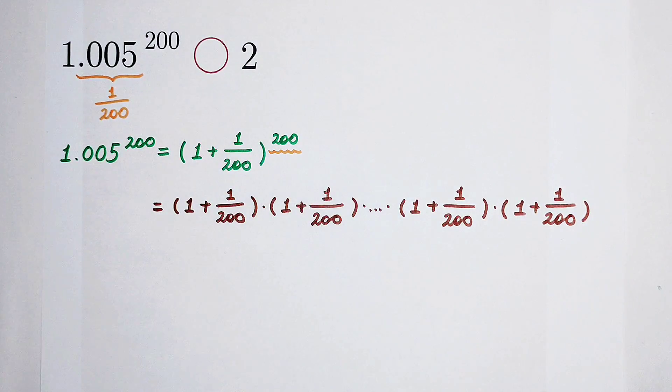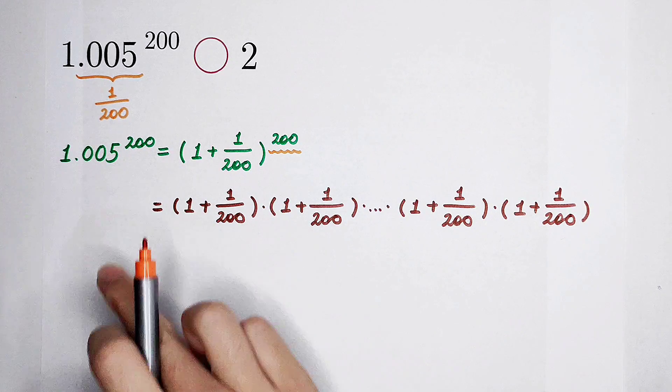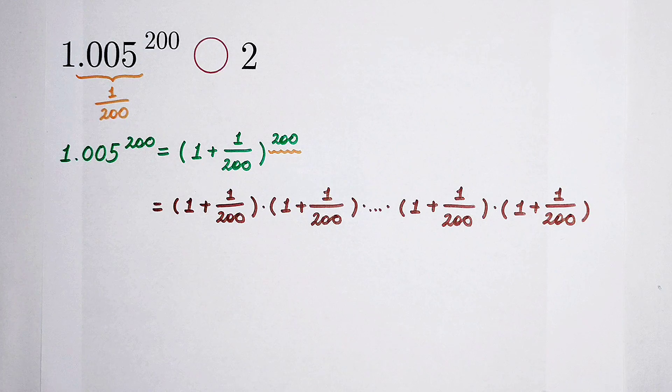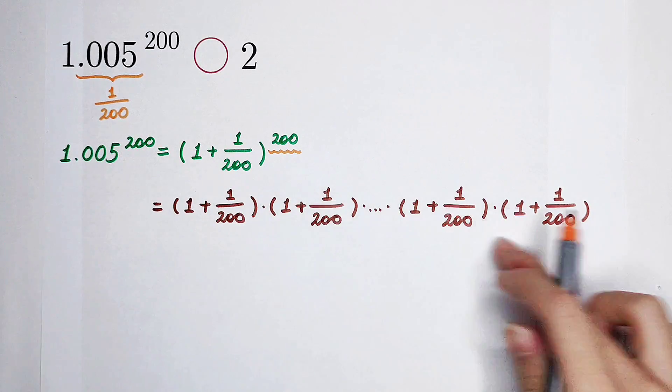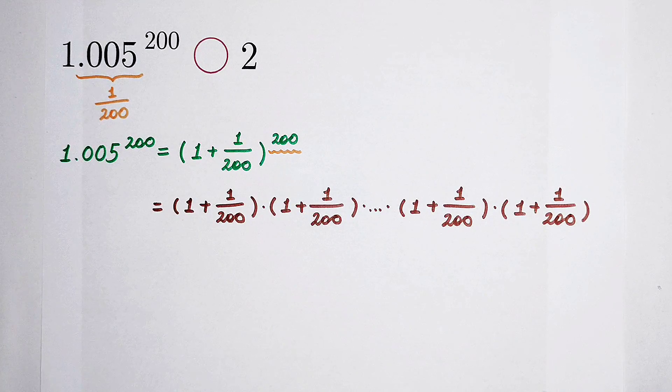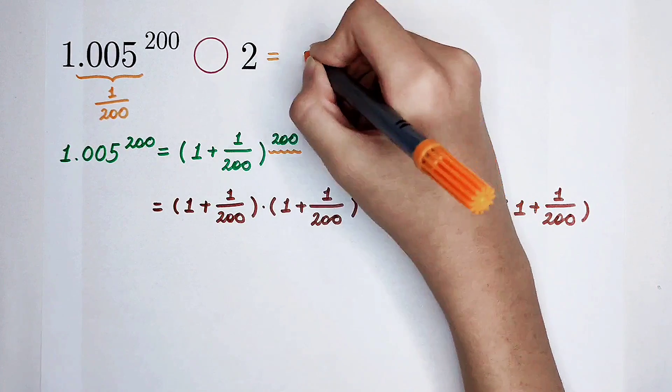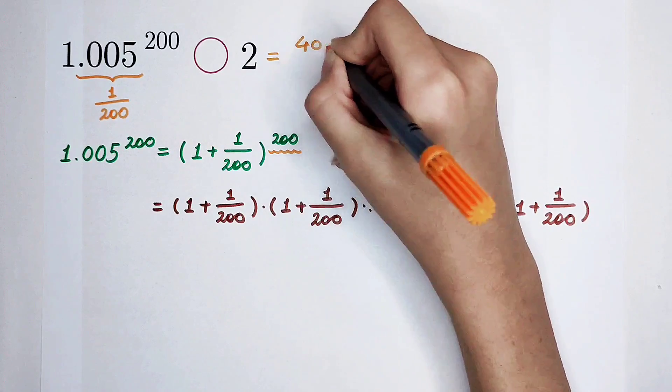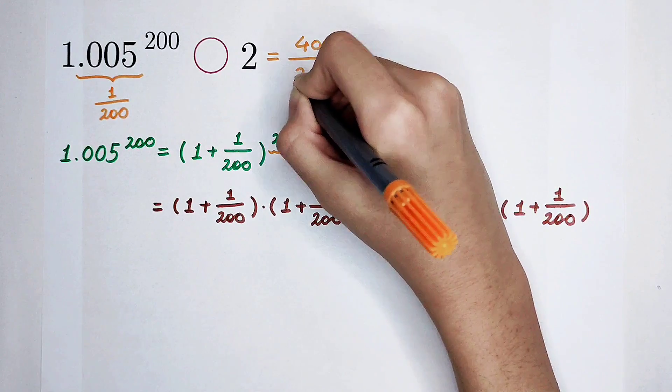This is the multiplication of 200 numbers. Can 2 also be written as this form? We don't know. Maybe, or maybe not. This is a product of 200 numbers. Of course. Now, I'm going to write this 2 as 400 and then divide it by 200.